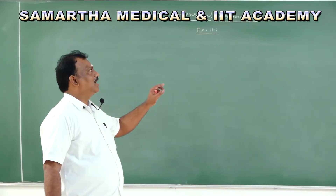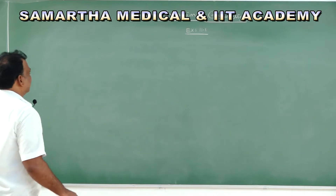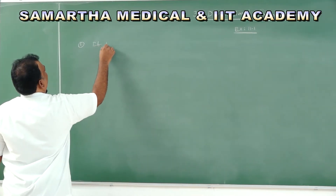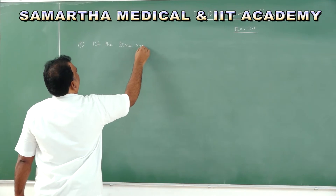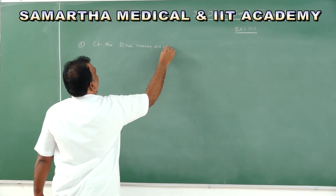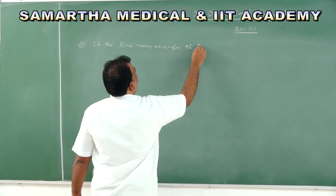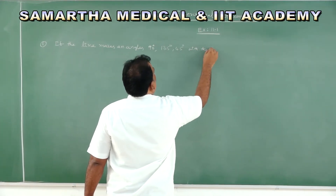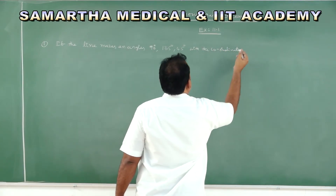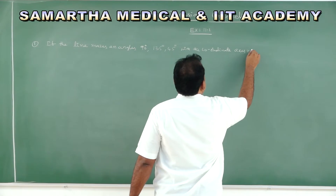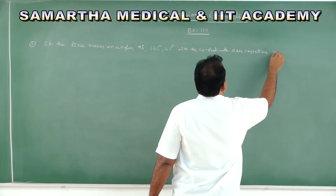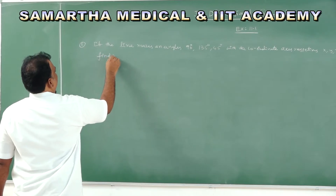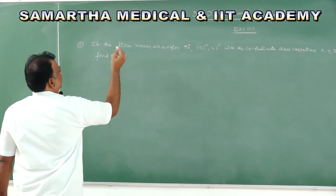Based on this concept, we go through Exercise 11.1. Questions are for one or two marks. The first question: if a line makes angles 90°, 135°, 45° with the coordinate axes x, y, z respectively, find the direction cosines.